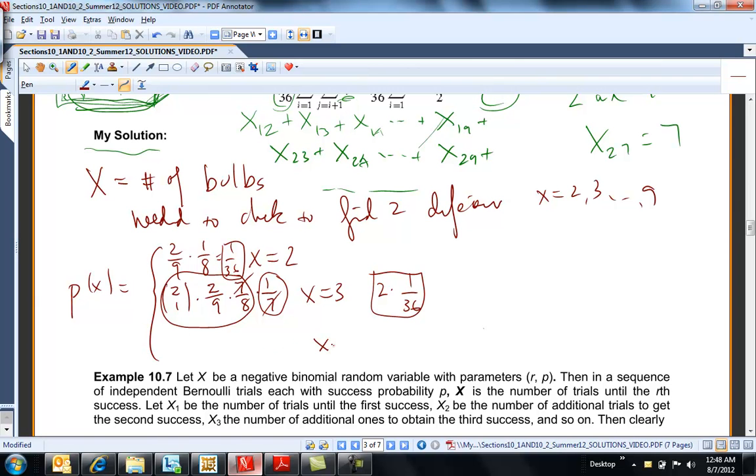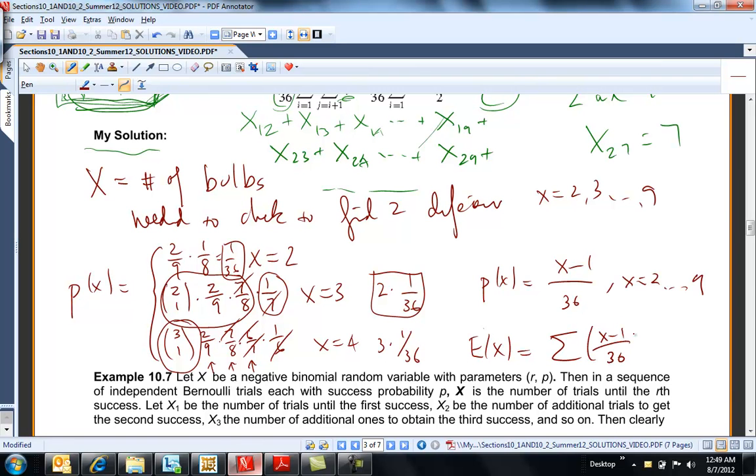So the probability that you find it on the fourth one means that you got one defective in your first three draws. So 3 choose 1, 2 ninths, times 7 eighths, times 6 sevenths. So this is defective, non, and non. And I've accounted that three different ways this could happen. It could have been the first, second, or third. And then the last guy is defective again. So that's 1 sixth. Notice again, you get this nice canceling. So this is going to be 3 times 1 over 36. So pretty much p of x, you can see what it's going to be. This is x minus 1 over 36 for x equal to up to 9. And then expected value of x is just the sum of x minus 1 over 36 times x from x equal 2 to 9. And this comes out to be whatever it was up there, 6.67.